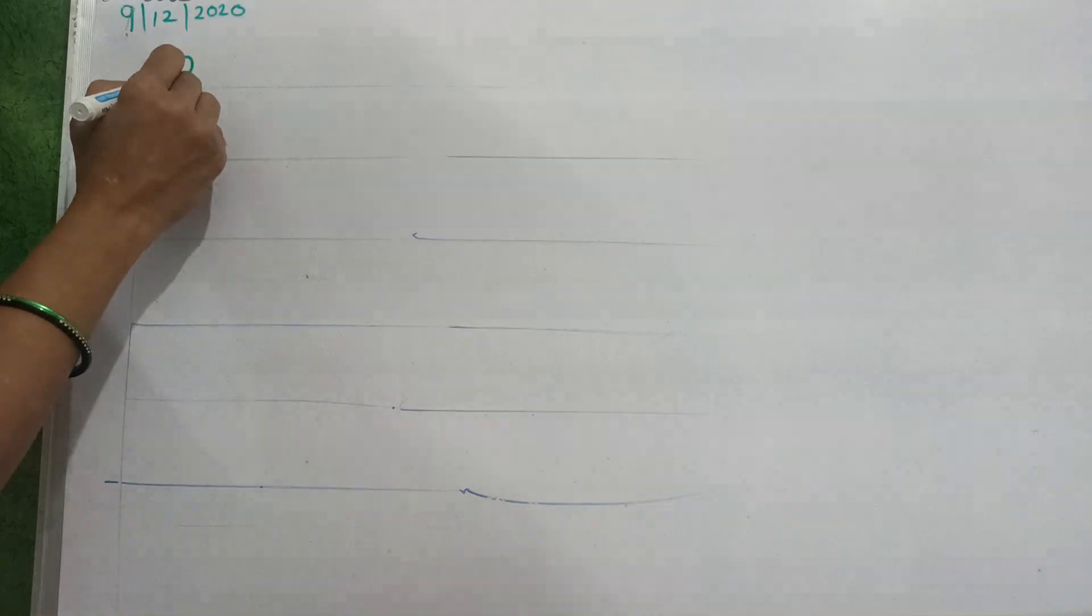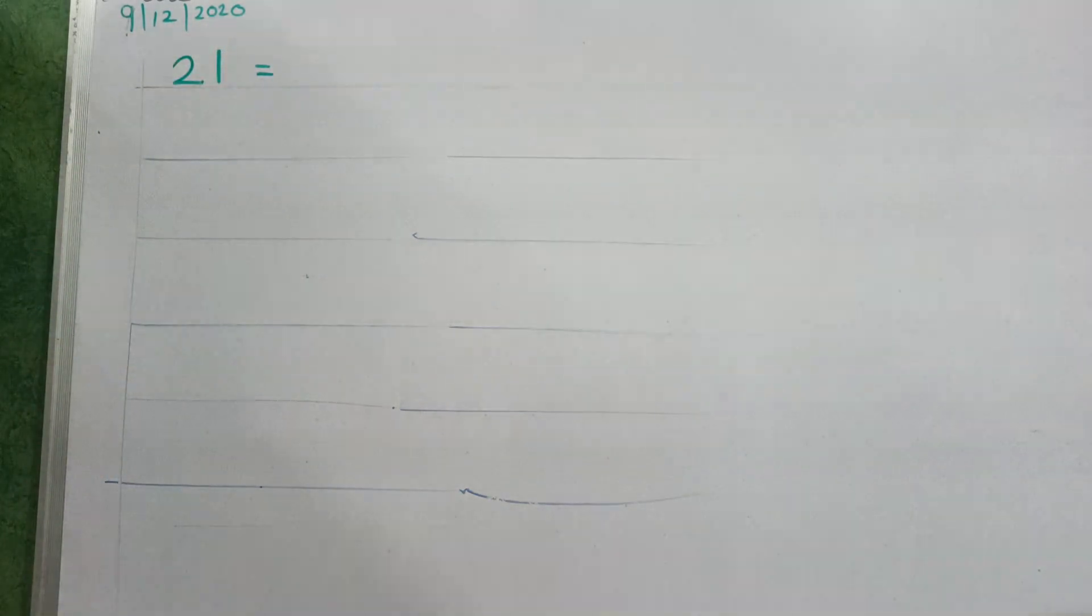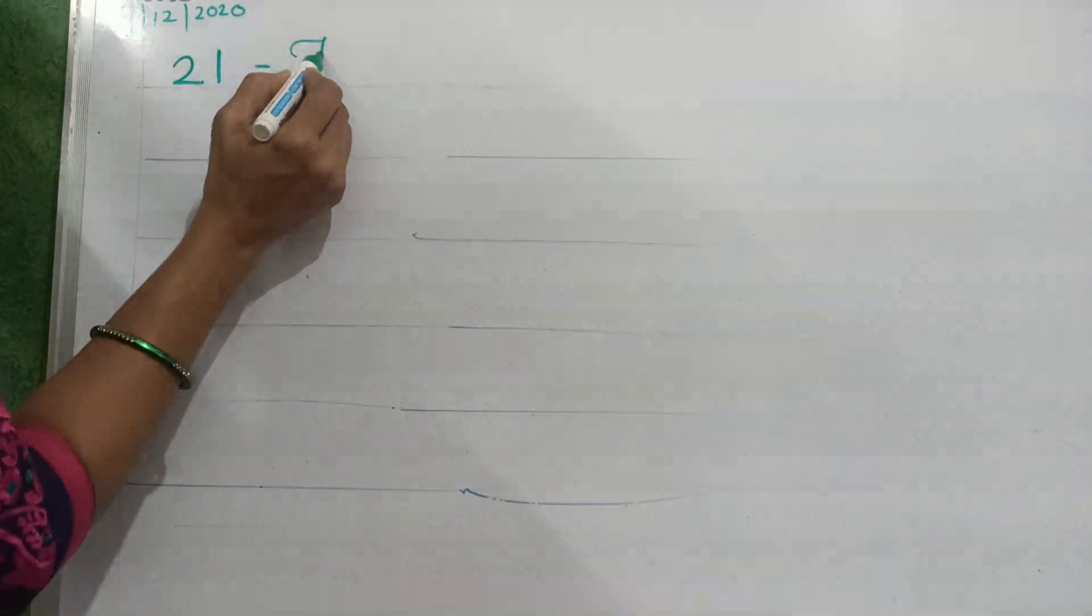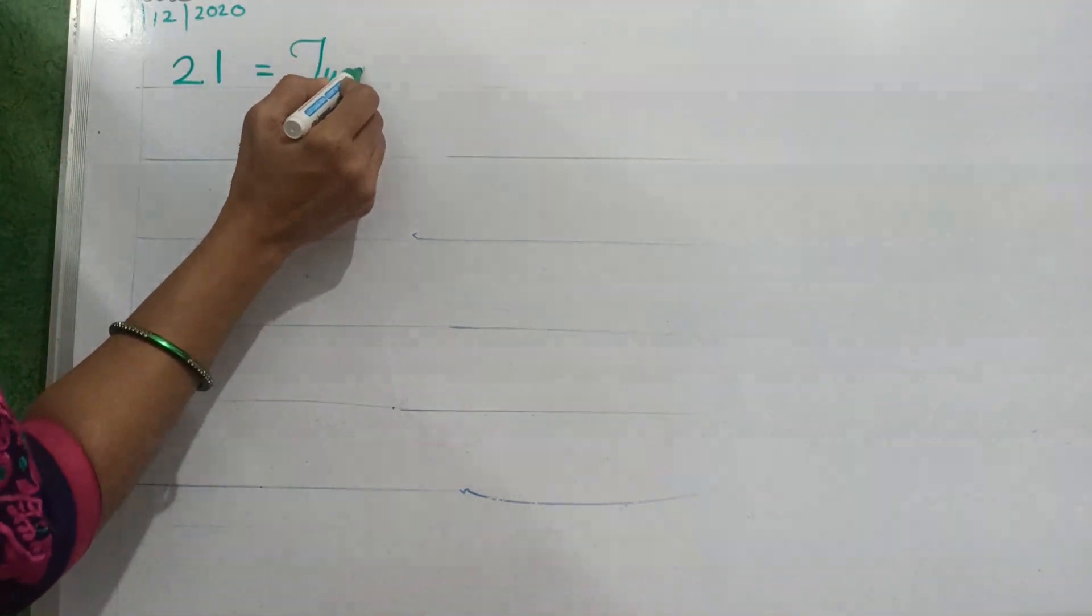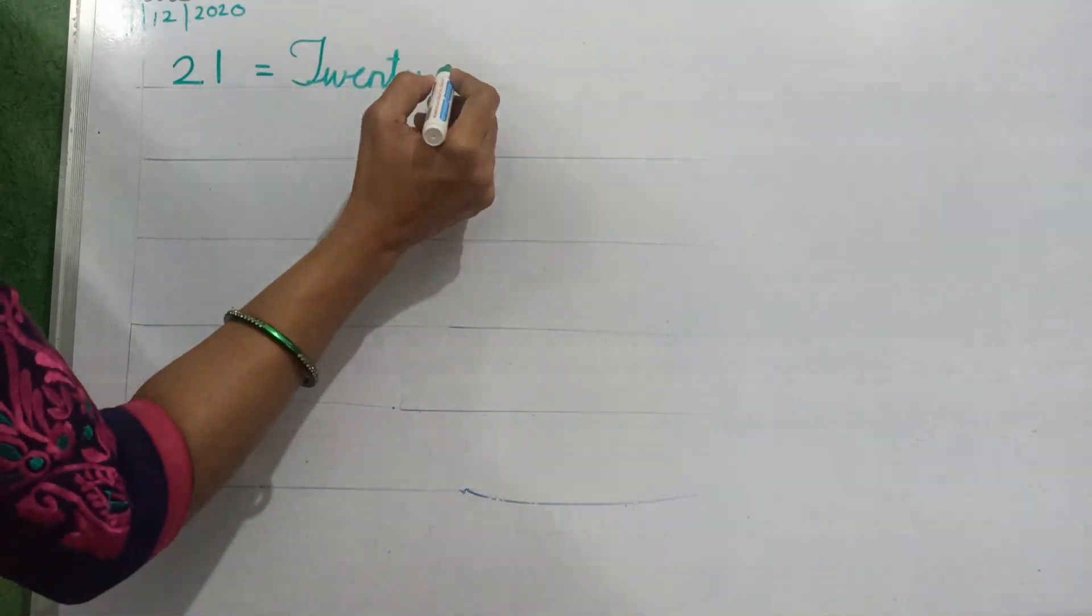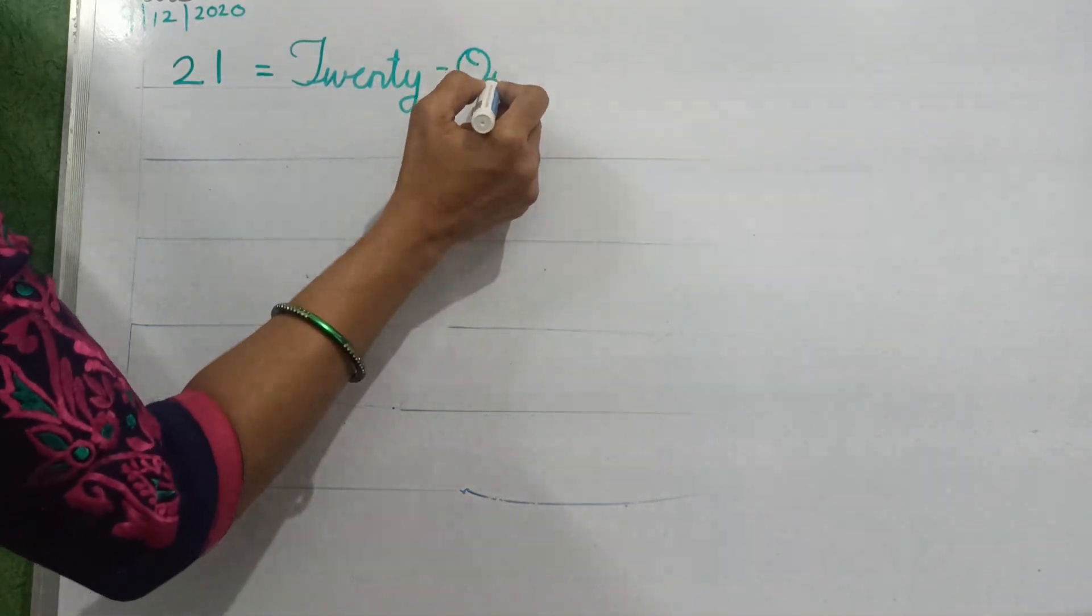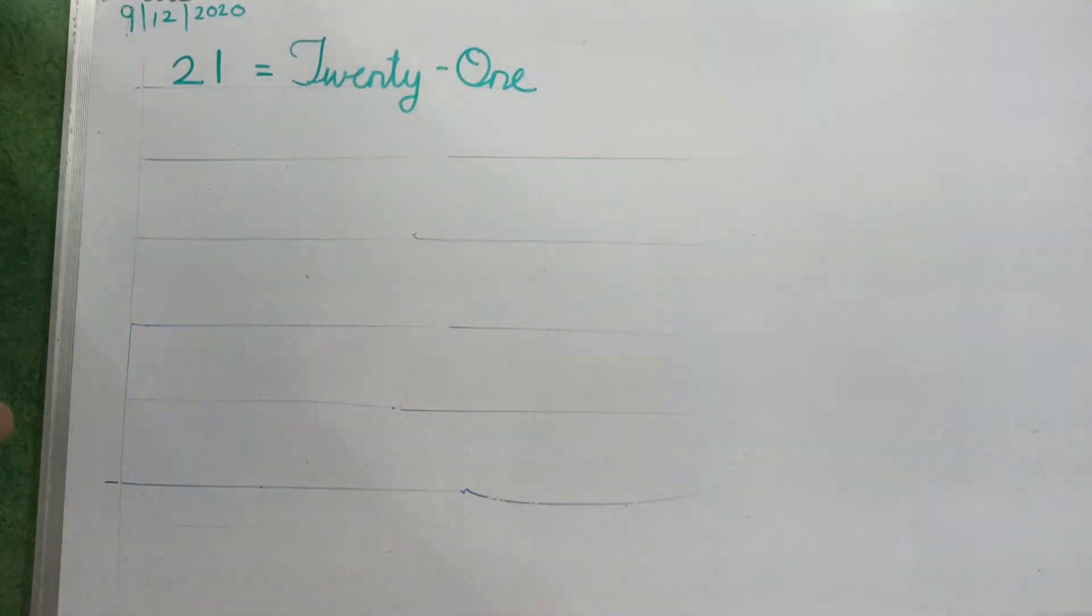Let us start. 2, 1, 21. See how I am writing. T, W, E, N, T, Y, 20. Small sleeping line, capital O, O, N, E, 1. Okay.